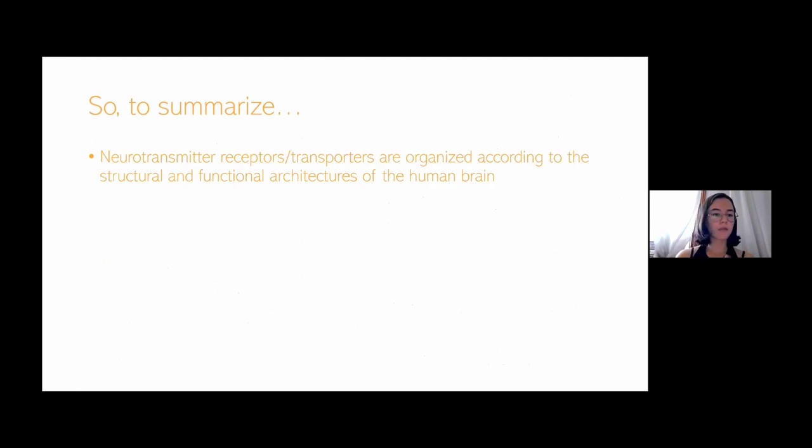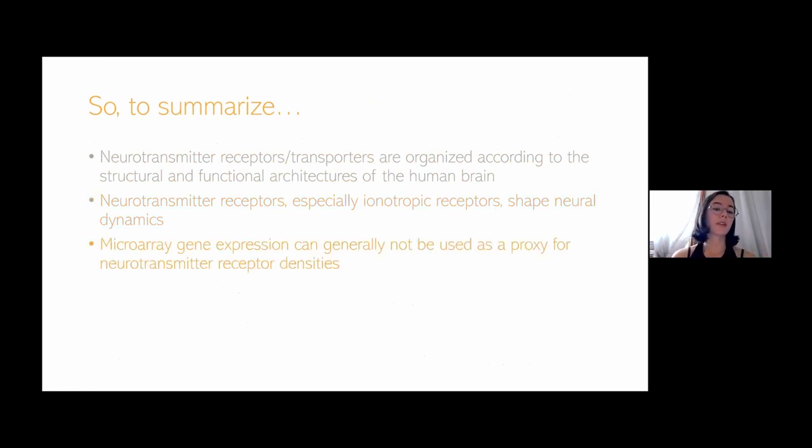To summarize, we find that these neurotransmitter receptors and transporters are organized according to the structural and functional architectures of the human brain. I showed that with the diffusion-weighted MRI structural connectome and the fMRI BOLD functional connectome. Then I showed you that neurotransmitter receptors, especially ionotropic receptors, shape neural dynamics with the MEG result. And finally, that microarray gene expression can generally not be used as a proxy for neurotransmitter receptor density, except in some very special cases.